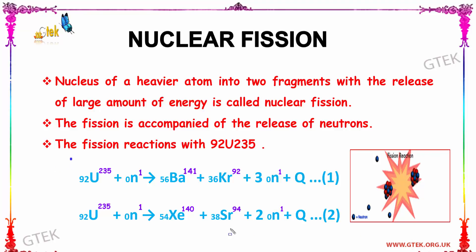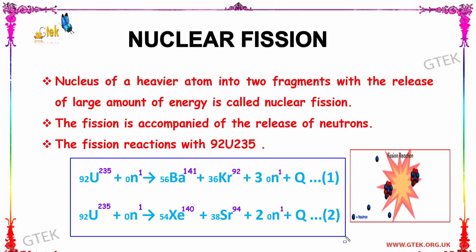The reaction is: uranium-235 plus one neutron gives Ba plus Kr plus 3 neutrons plus Q (energy released). In another reaction, uranium reacts with a neutron and gives Zr plus Sr plus 2 neutrons plus Q.